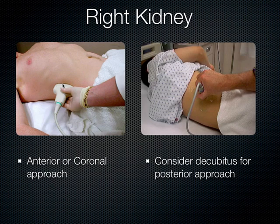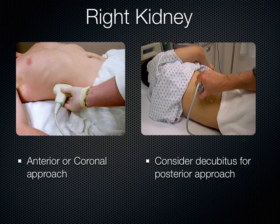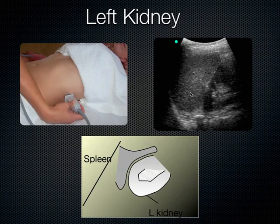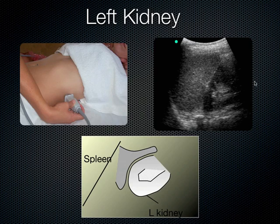Switching to the kidney: you can use an anterior approach, a coronal approach with the indicator toward the patient's head, or a posterior approach with the patient in decubitus position, going between the ribs. A smaller footprint phased array transducer helps when scanning between ribs. The right kidney is usually easy to see due to the large liver. The left kidney is harder since the spleen is smaller — you may need to drop a rib level or go more posterior to find the lower pole.